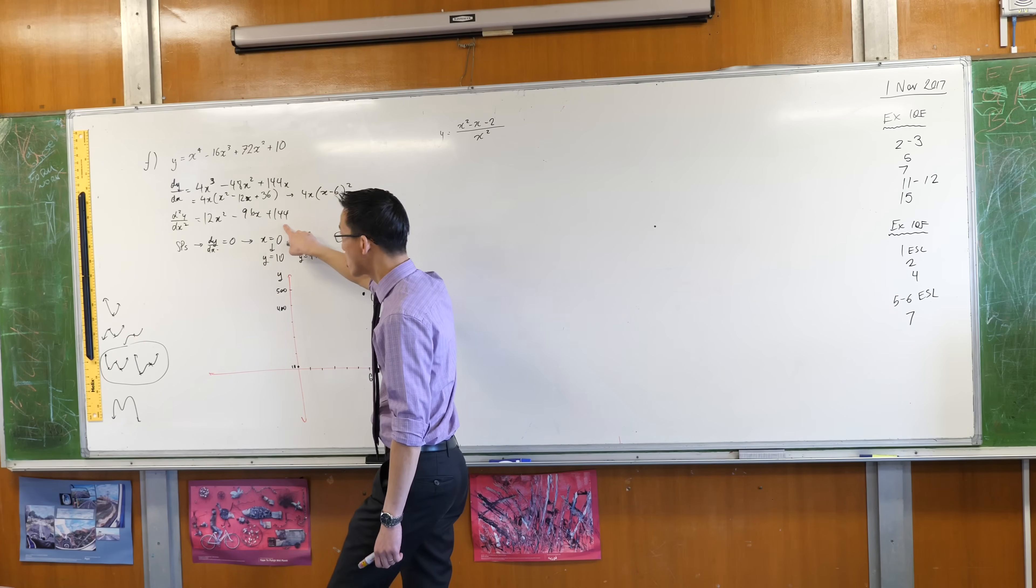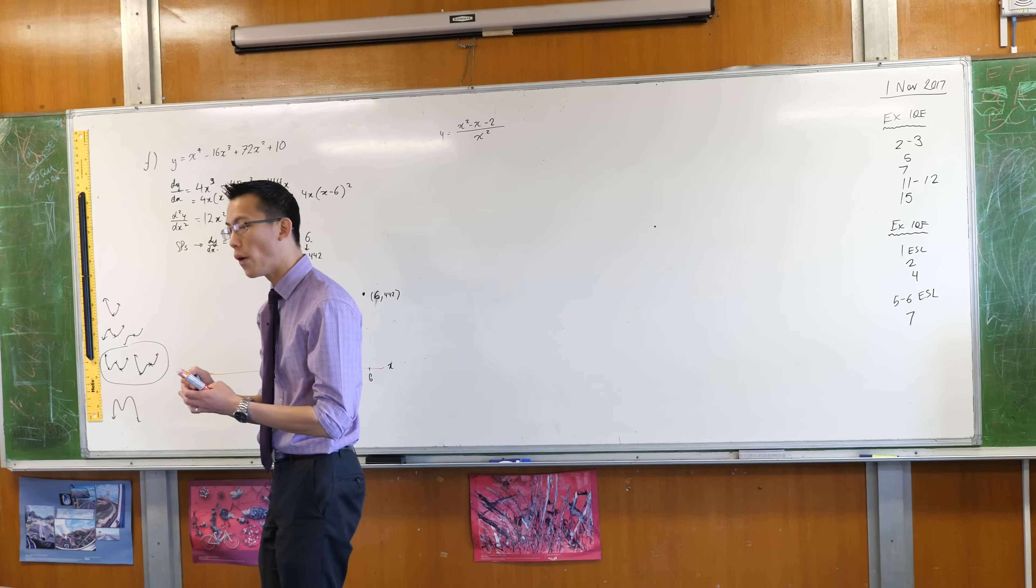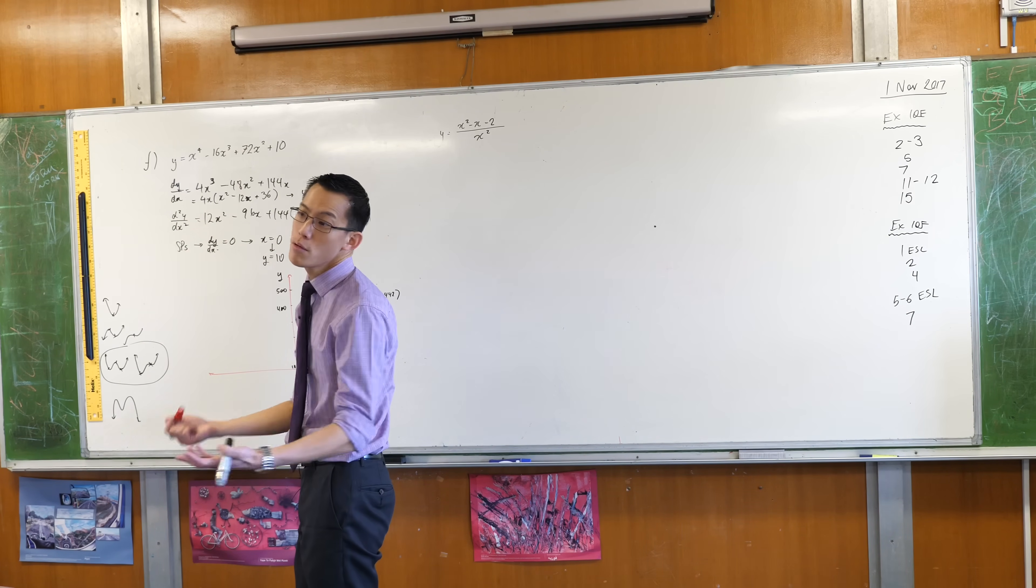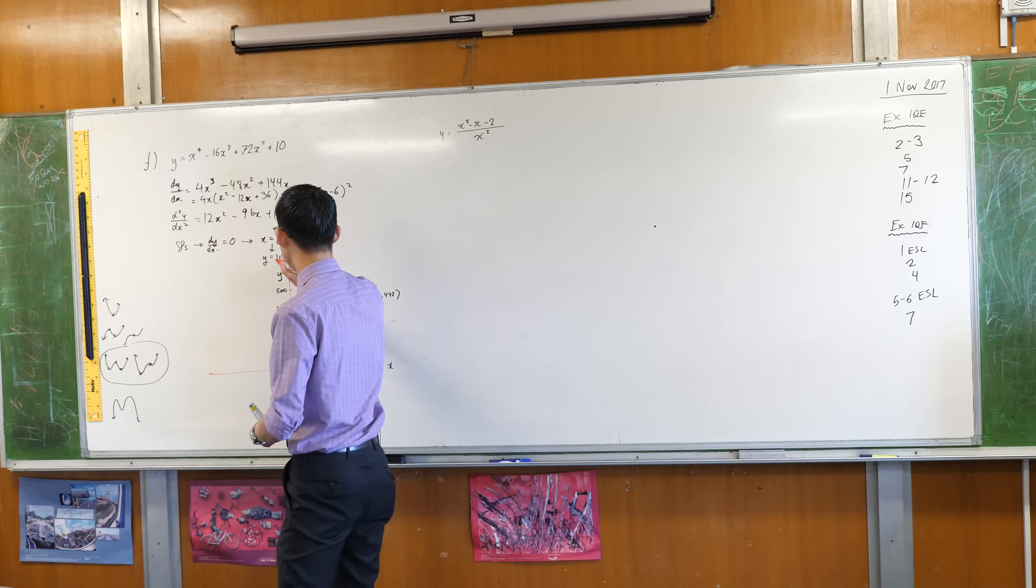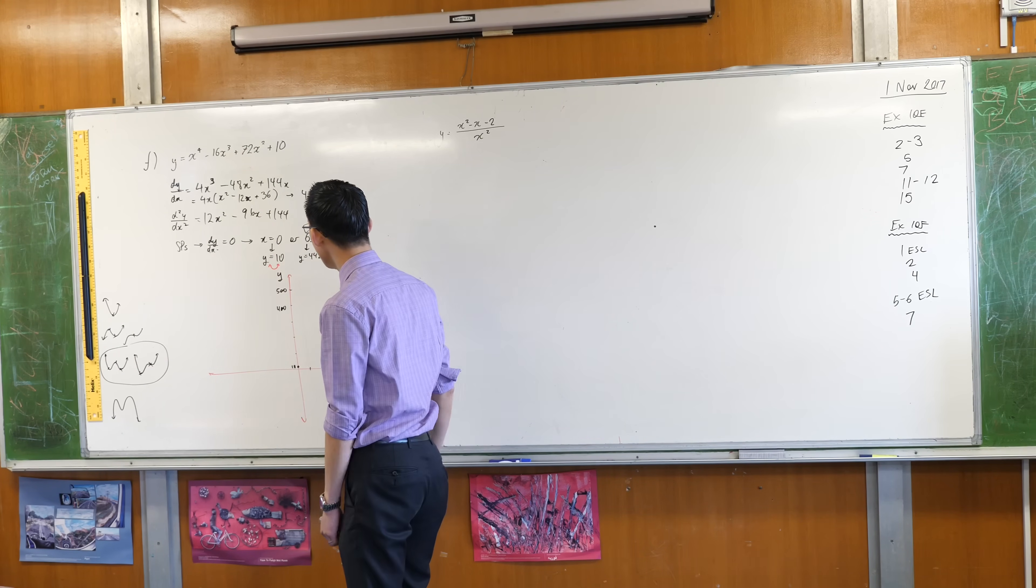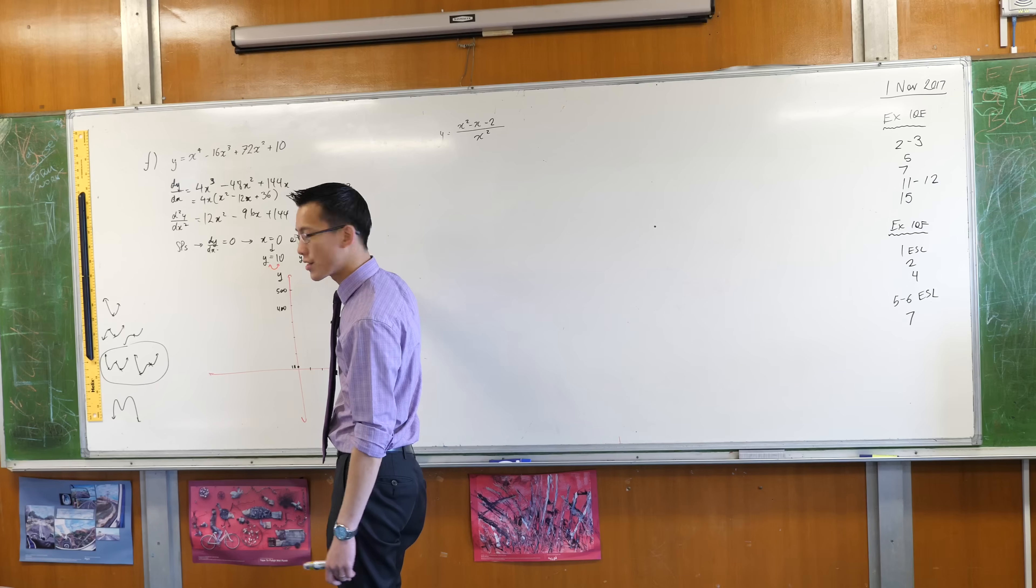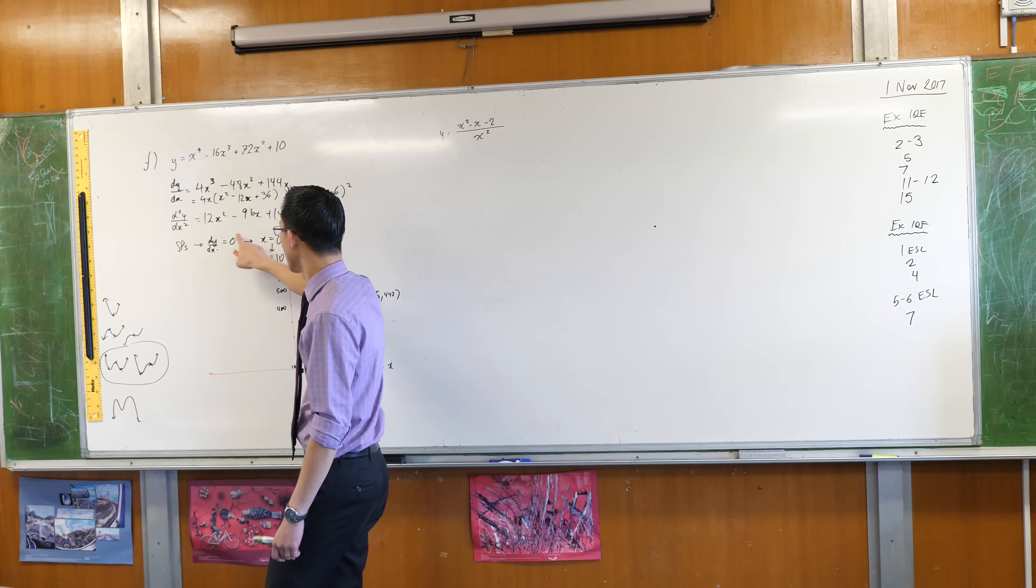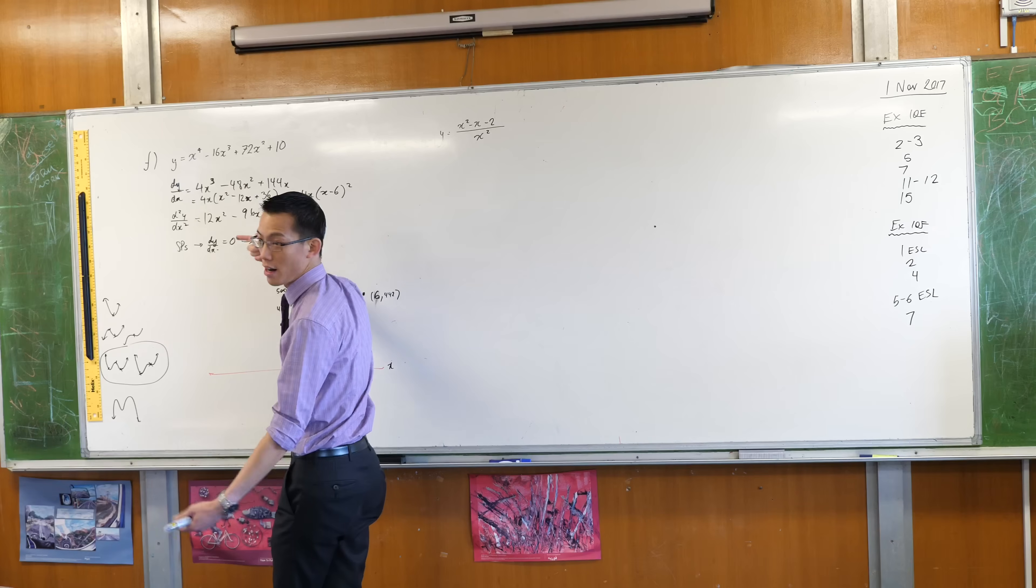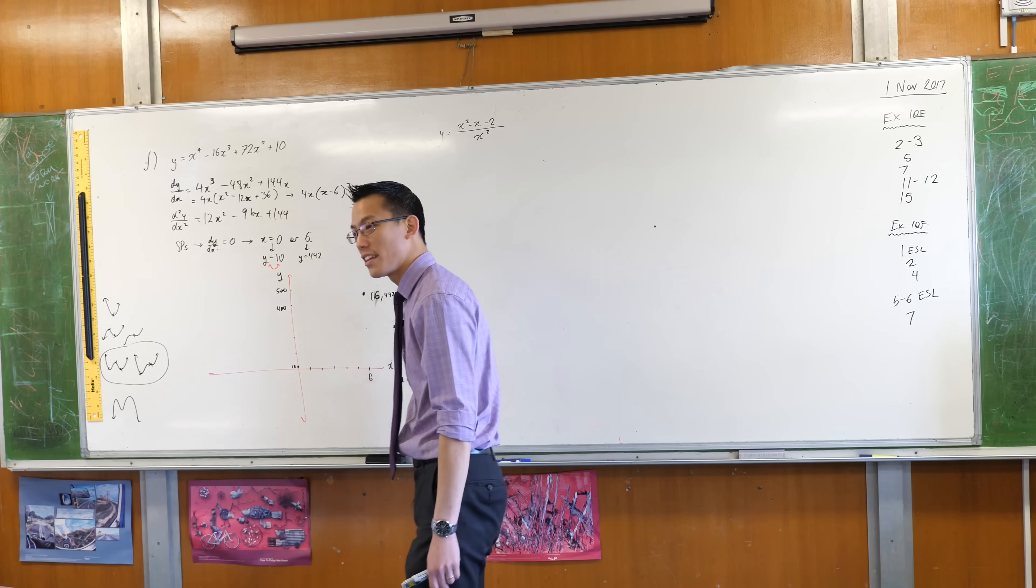Let's have a look. When x equals zero, that's our first stationary point. You can look at this very quickly. When x equals zero, what is the sign of the second derivative? The number is 144 which is positive, so this one is concave up. Does that make sense? When you put in x equals six, 12 times 36 minus 96 times 6 plus 144, I don't know, but I would put some money down that it's zero.